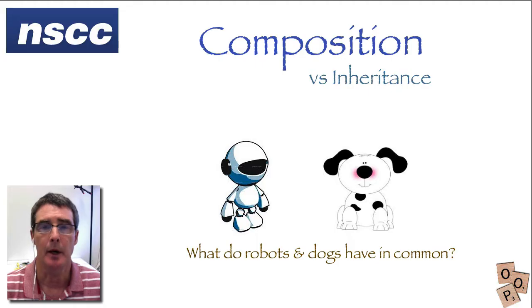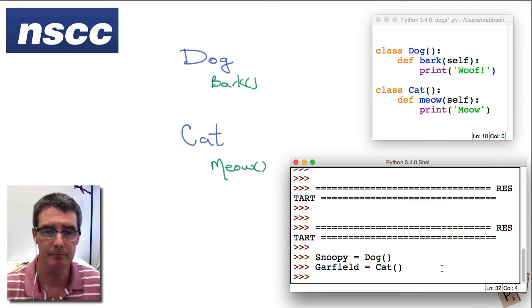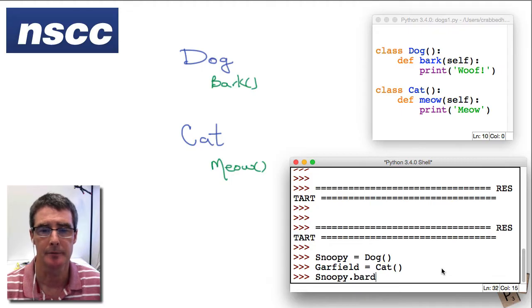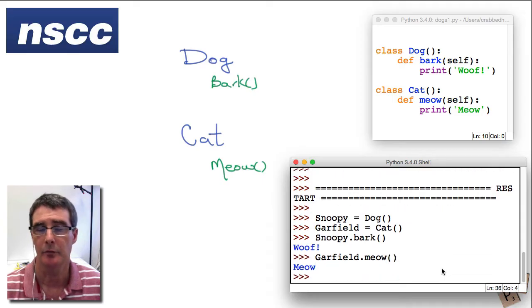So we started our design by creating these classes here, we have our two classes. We want to be able to create dog objects that bark and cat objects that meow. So we start by creating a couple classes which are very simply represented by the software. So we've got Snoopy and we've got Garfield, and if we want Snoopy to bark we just invoke the bark method and Garfield meows by using the meow method.